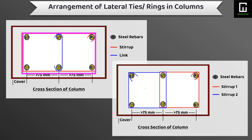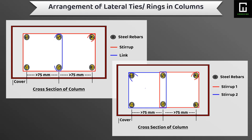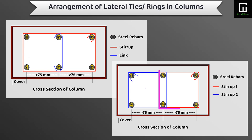The stirrup is provided at the corner bars of the column, and one link is connected to the longitudinal bar numbers five and six. Otherwise, we can also provide the first four bars connected with a single tie and the last four bars connected with another single tie.